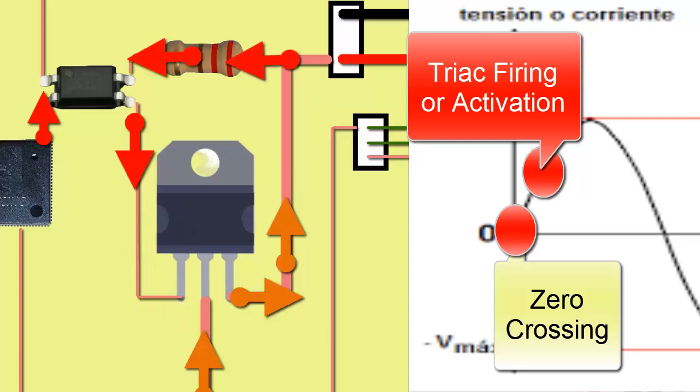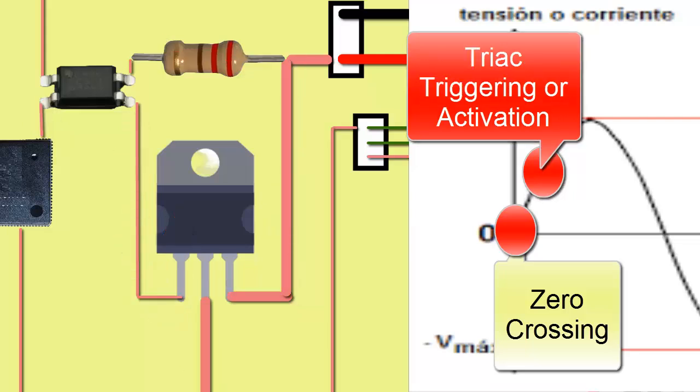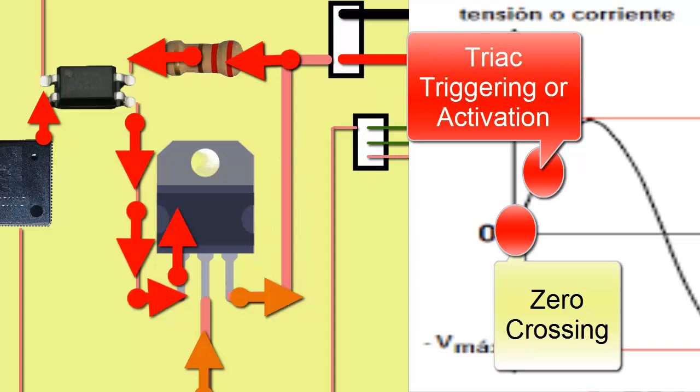For example, for high speed, the triac fires quickly once the curve crosses zero, allowing the fan motor to rapidly reach the desired speed.